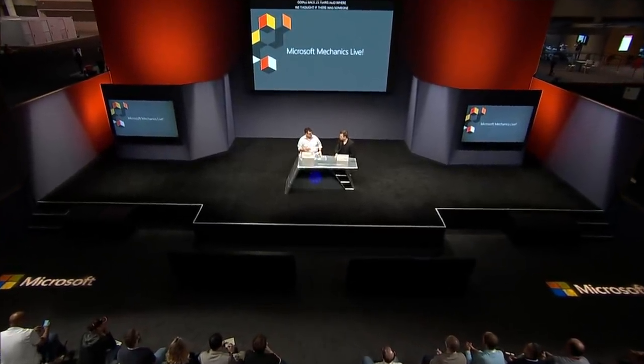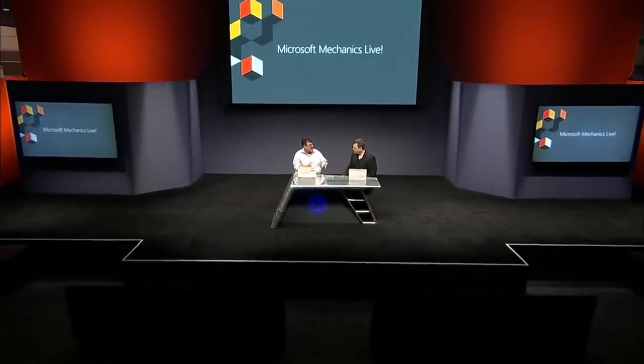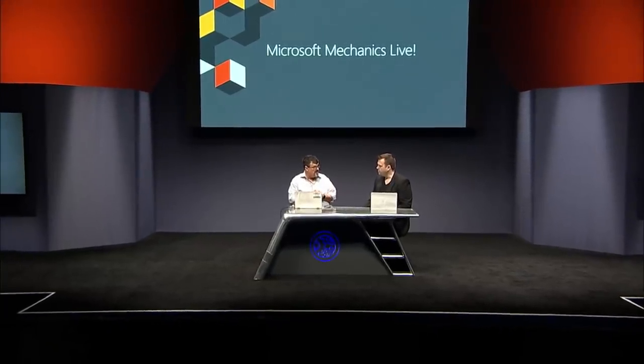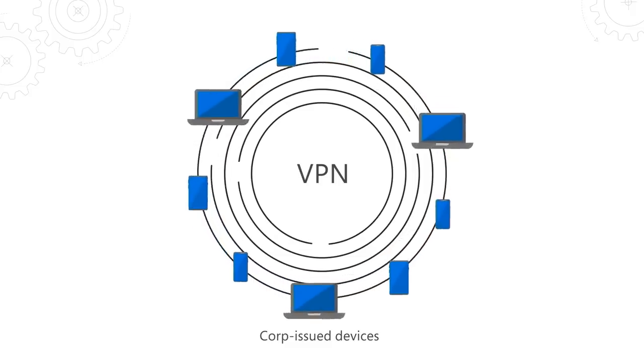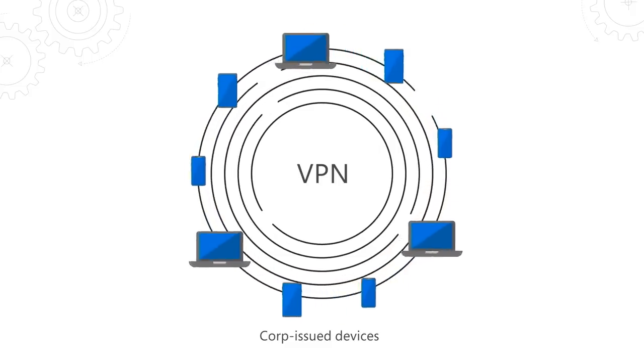But if you look at the attacks we've seen — where attackers are able to get into networks within 24 hours, get domain admin in 48 hours, and stay resident in networks for a hundred days — we can see the walled garden approach has some pretty serious flaws. And that extended out to the concept of VPN as well. As soon as you punch a VPN to that network, you have connectivity to the outside world.